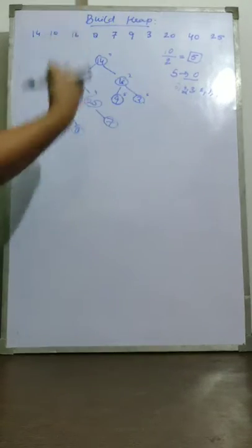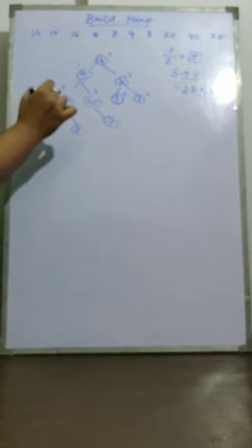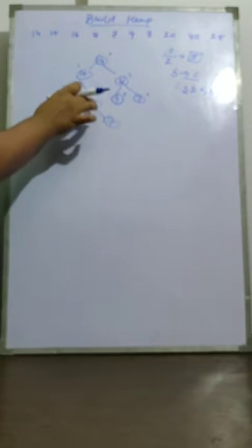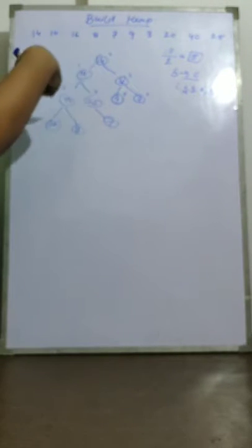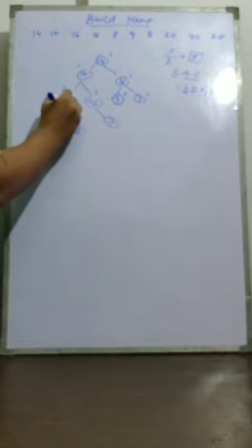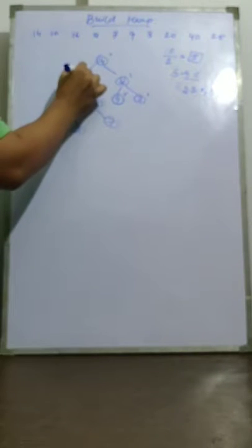Now I reach index 1. Is 10 a max heap? No, because both 25 and 40 are greater than 10. The biggest child is 40, so I swap 10 with 40. Now 40 moves up and 10 moves down.